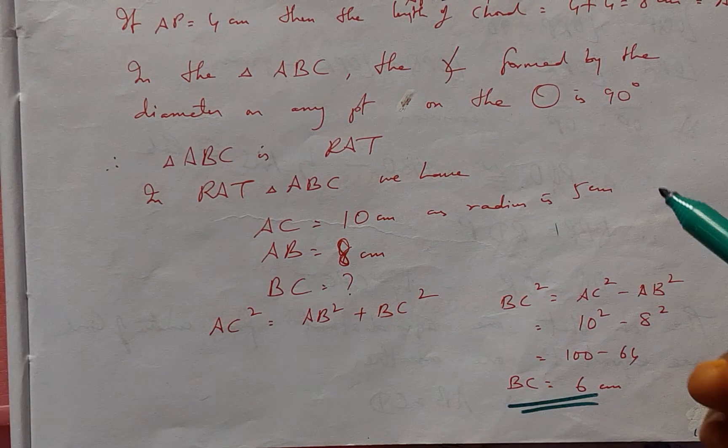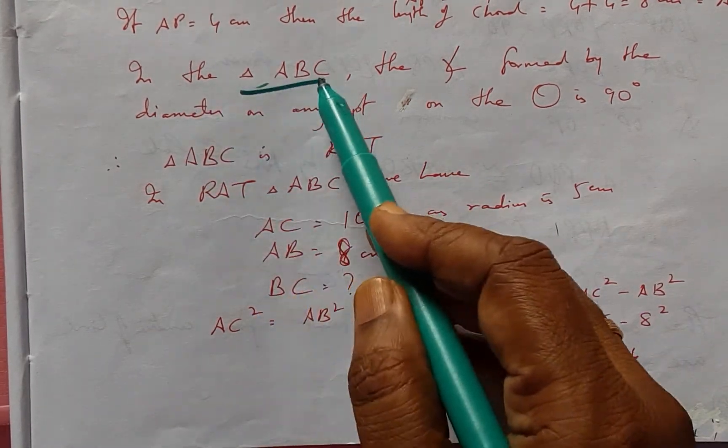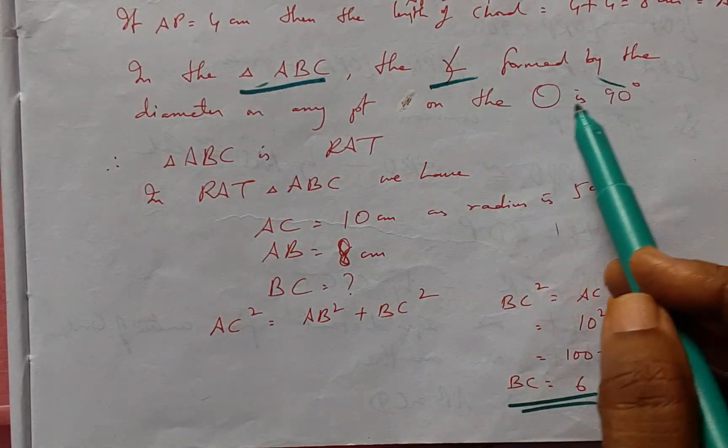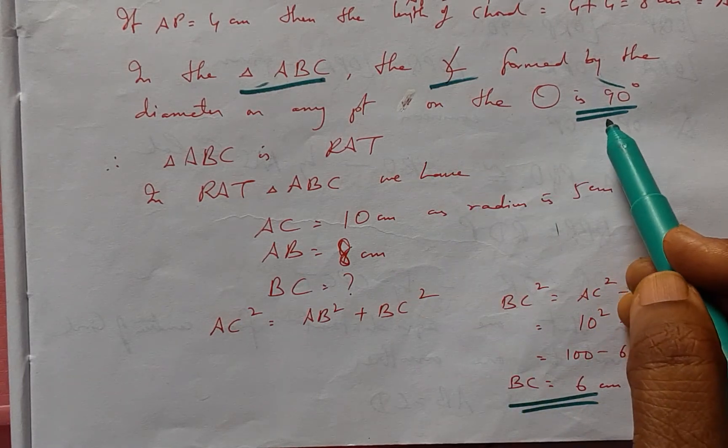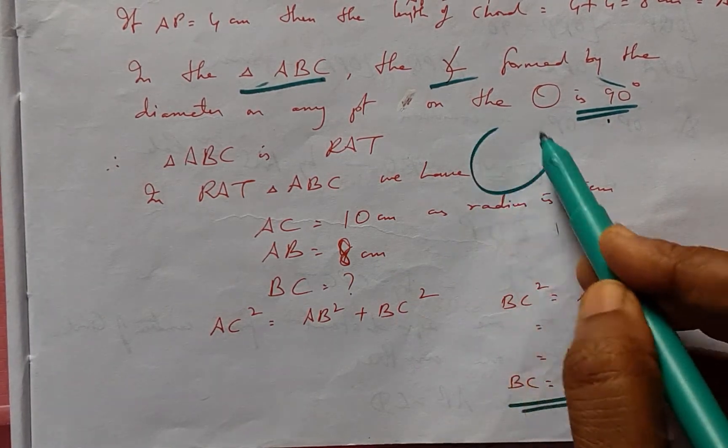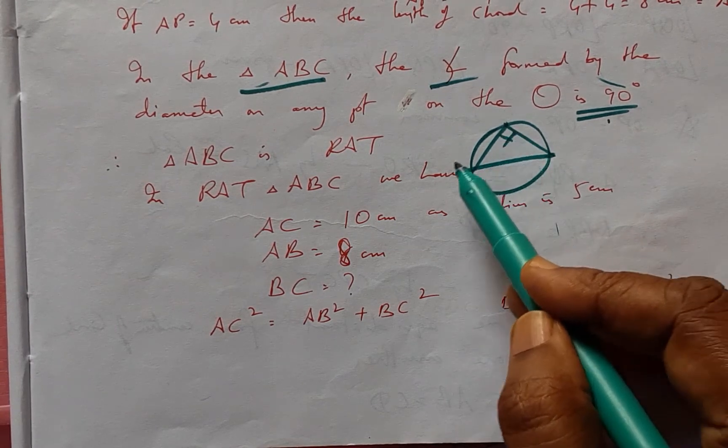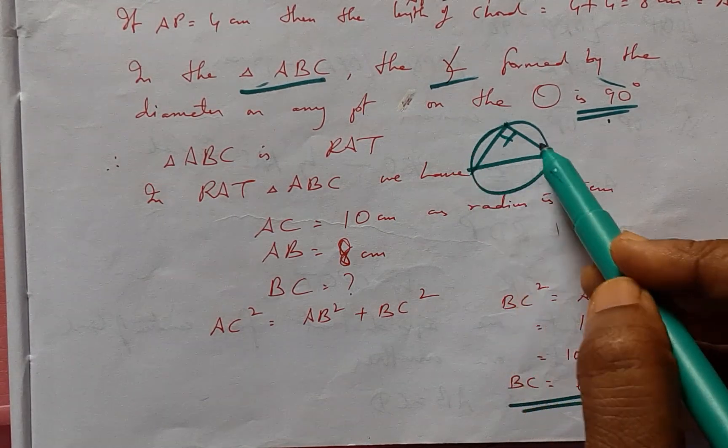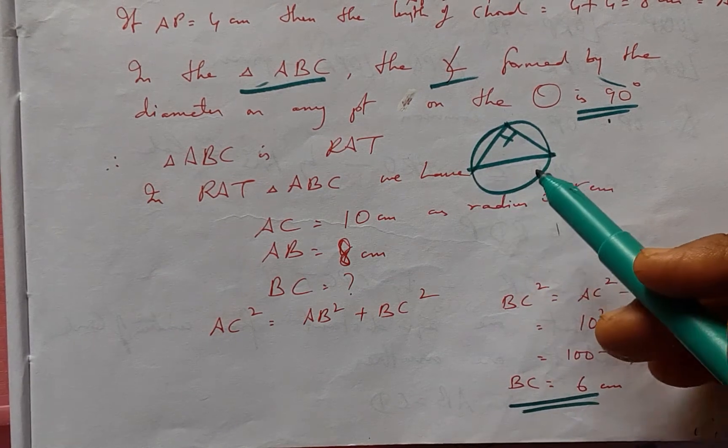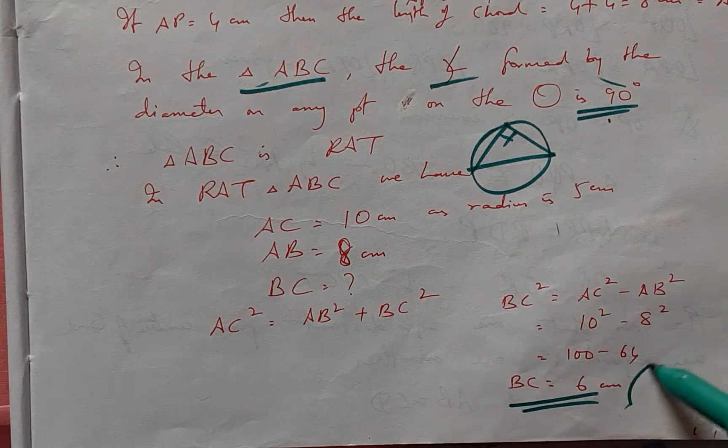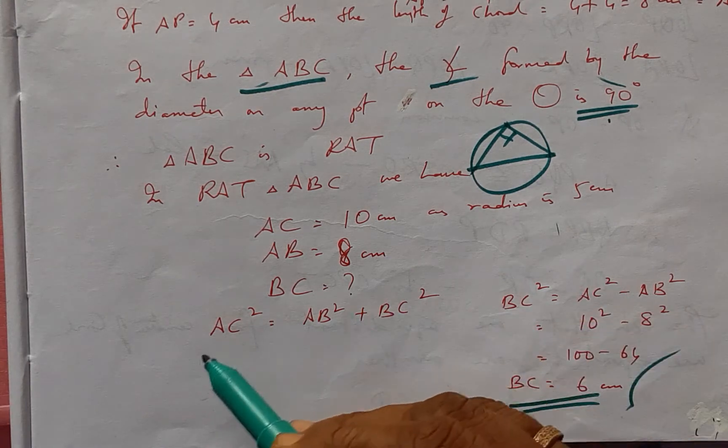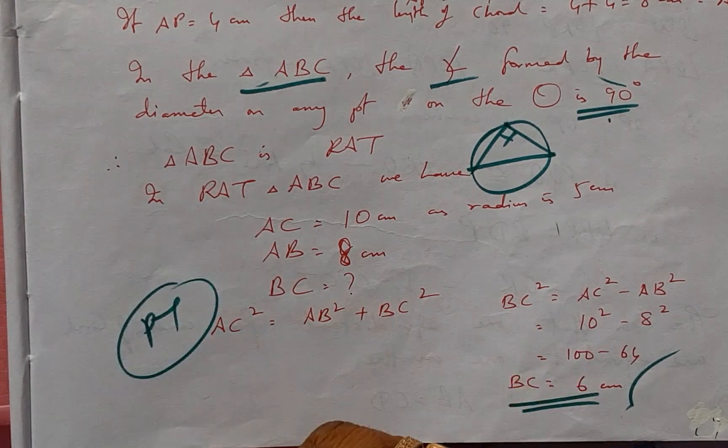As I said, the triangle becomes a right angle triangle because the diameter forms 90 degrees on the circle wherever the two chords meet. And that is how BC has been achieved by putting the Pythagorean theorem in place.